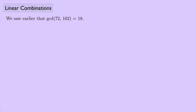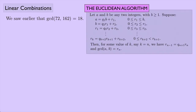We saw earlier that the greatest common divisor of 72 and 162 was 18. This was shown in another video using the Euclidean algorithm. We started by writing the larger number, 162, as equal to 2 times 72 plus 18. Then 72 equals 4 times 18 with a remainder of 0. Once you get a remainder of 0, the last non-zero remainder is the GCD — the greatest common divisor.